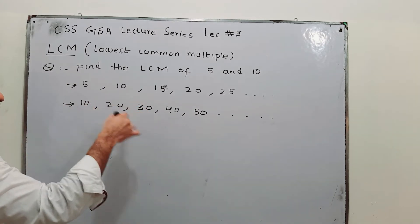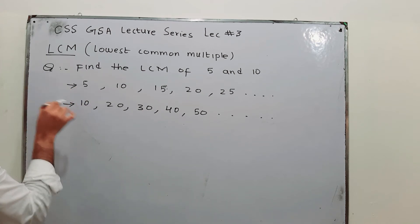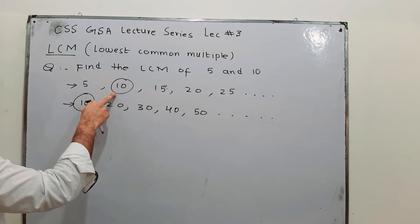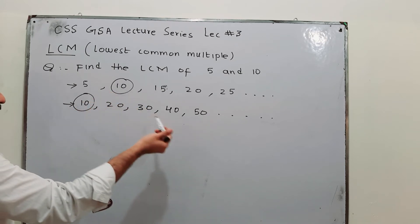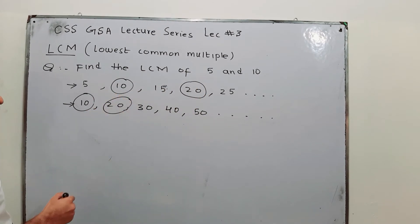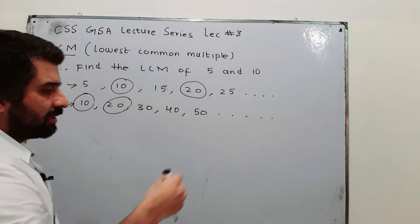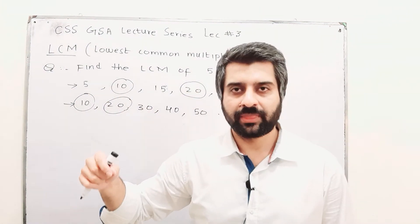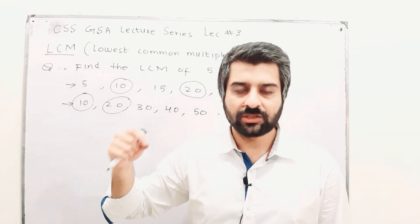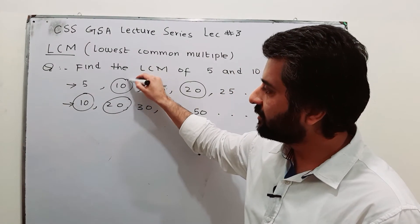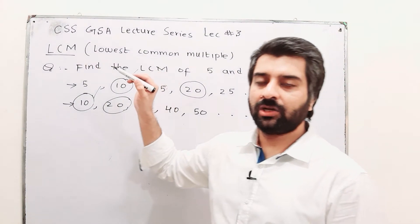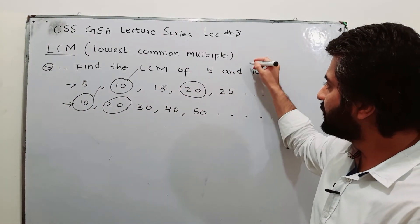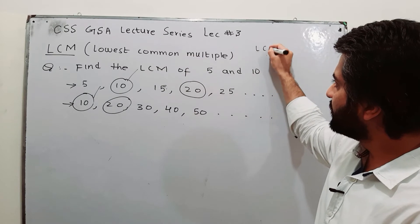Do we have a common multiple in the multiples of 5 and multiples of 10? Yes — 10 is a multiple that is common to both. We also have 20, and there will be many more common multiples as you move on. But the lowest one is the LCM — lowest common multiple — and that is 10. So the LCM of 5 and 10 is 10.